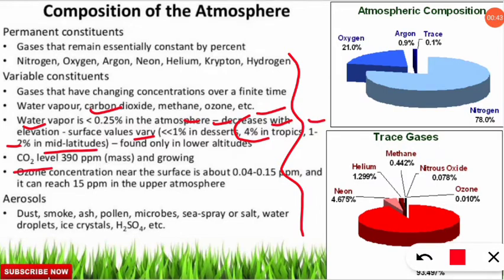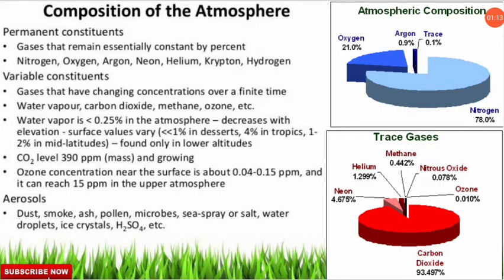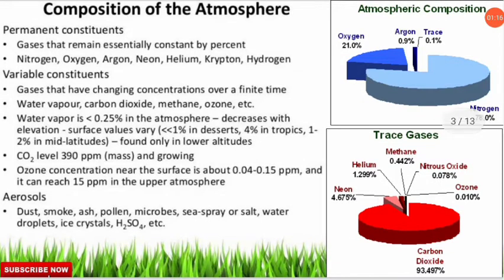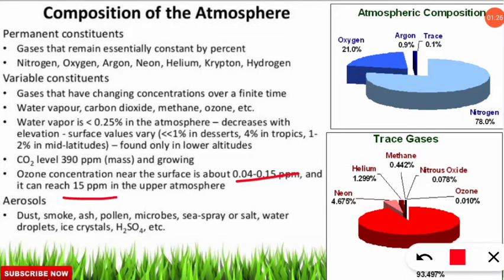The current carbon dioxide level in the atmosphere is 410 ppm (parts per million) according to 2019 latest reports — note this important figure. Ozone is also a variable constituent; its concentration near the Earth's surface is about 0.04 to 0.15 ppm, and it can reach up to 15 ppm in the upper atmosphere — specifically in the stratosphere region where ozone is at its maximum.